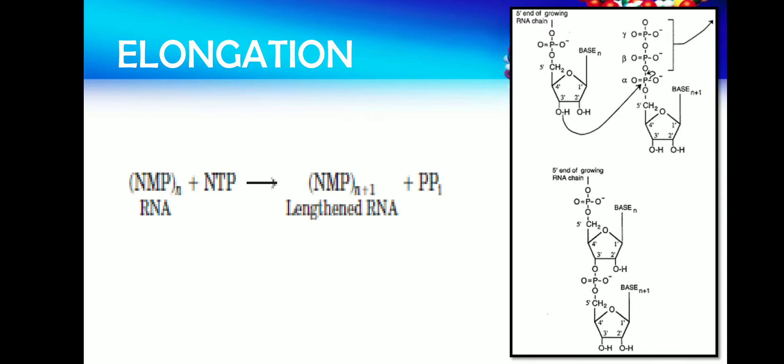The first nucleotide that will be added onto the mRNA will have three phosphate groups attached to it. Since the nucleotide has a base, the ribosugar, and three phosphate groups, all three phosphate groups will be bound to the first nucleotide. So the first nucleotide added onto the RNA will always have three phosphate groups at the five prime end.